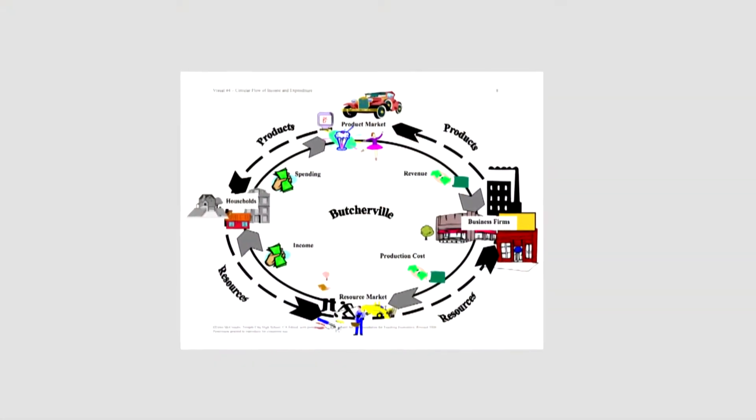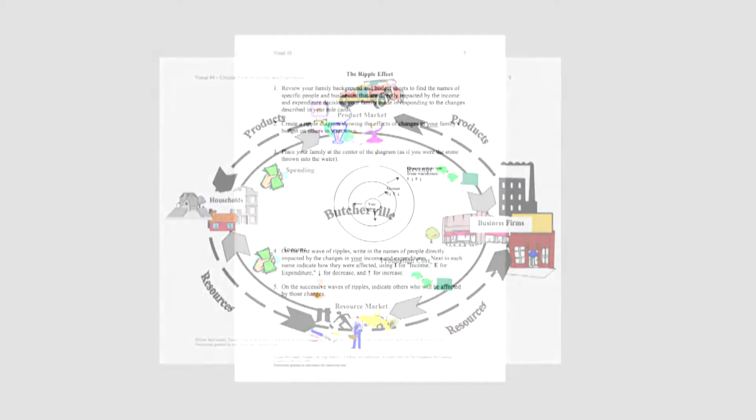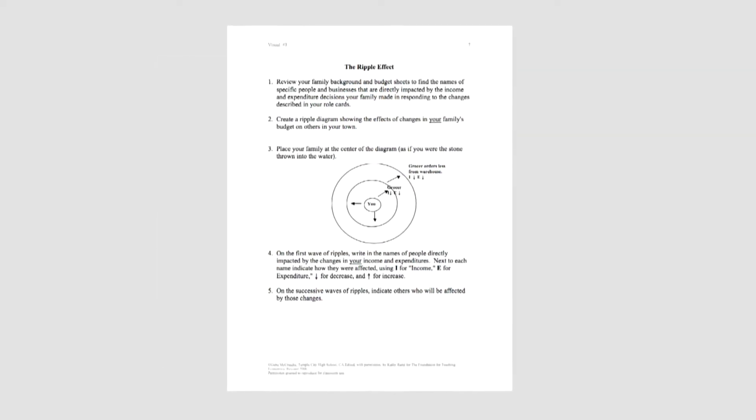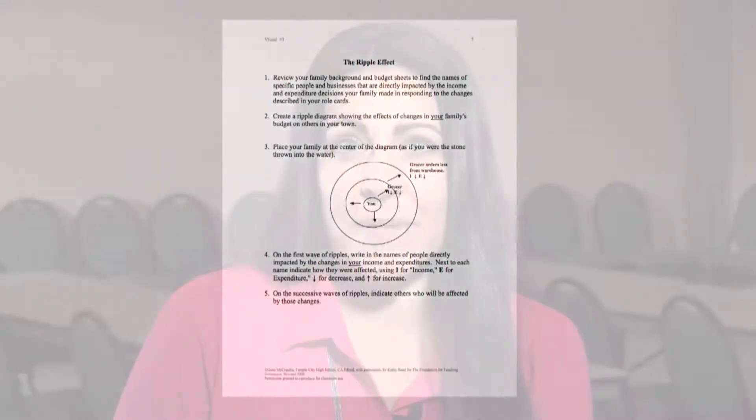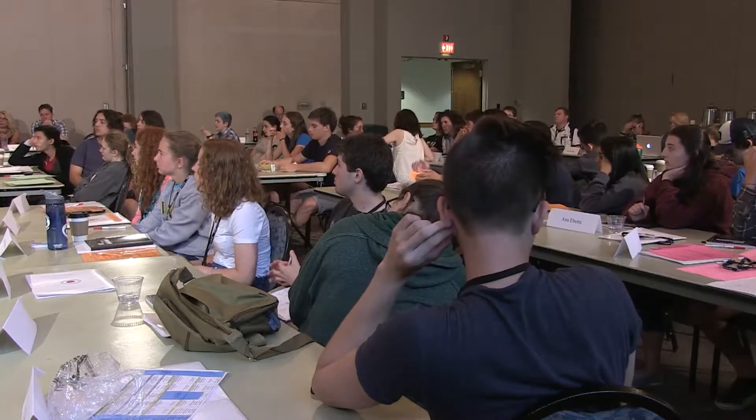Following the sharing of family decisions, use the circular flow visual to help students understand that one person's expenditure is another person's income. Show the ripple effect visual and give examples of how one decision made by a family has a ripple effect impacting the income and expenditure of someone else. If your families are representative of what's happening, what's happening to the overall level of income in Butcherville? It's going down — you can just feel it shrinking.